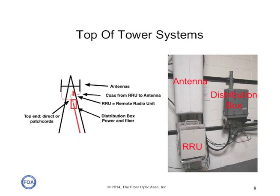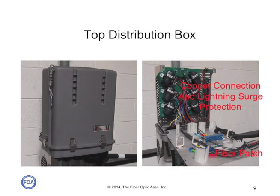Here's an example of some actual hardware installed in a teaching lab. To the left is a distribution box that terminates the fiber and copper conductors and breaks out into two separate power and signal cables to the remote radio unit, or RRU, that drives the antenna over a coaxial cable. The distribution box has two sections: a fiber section with a patch panel to connect the cable coming up the tower to patch cords going to each remote radio unit, and a copper section with power connections and lightning surge protection for each RRU.